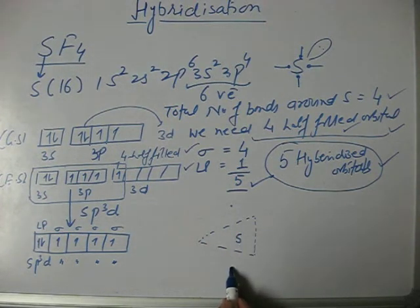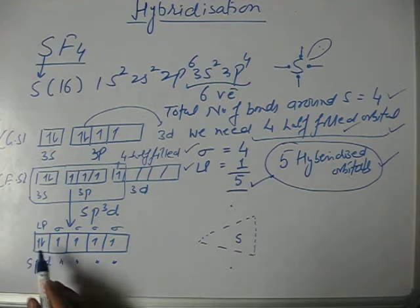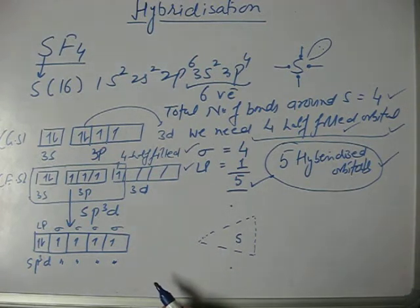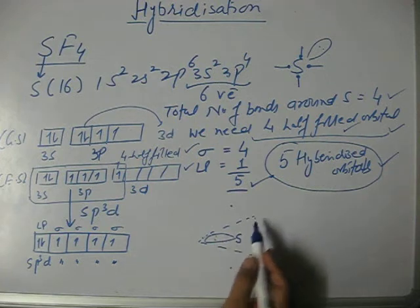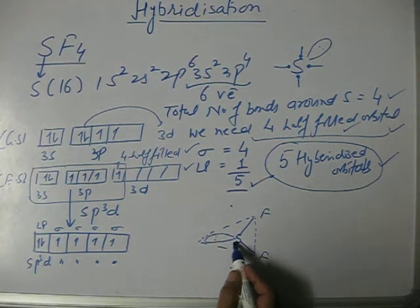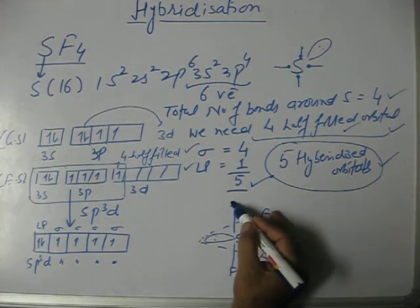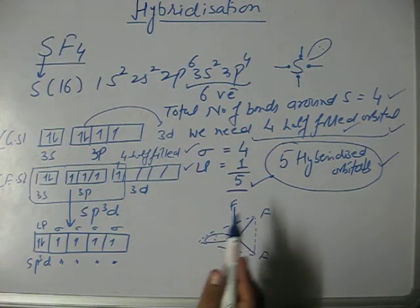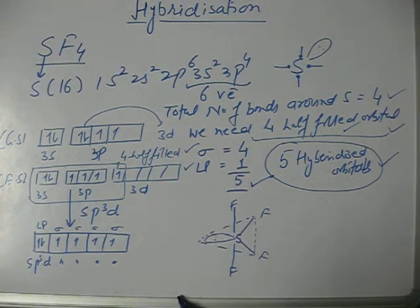In this trigonal bipyramidal we have five corners. The lone pairs are always in the equatorial positions because at axial positions they produce more repulsion. If we keep it here, then these positions—two in the plane in the triangular plane, one below and one above this plane—will be taken up by fluorine. When you decide the shape of the molecule, the skeletal is trigonal bipyramidal.